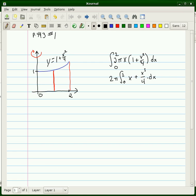Now we do the antiderivative and apply the Fundamental Theorem of Calculus part 2 to evaluate this integral. We have 2π, and the antiderivative of x is x squared over 2. The antiderivative of x cubed over 4 is x to the 4th over 16, evaluating from 0 to 2.